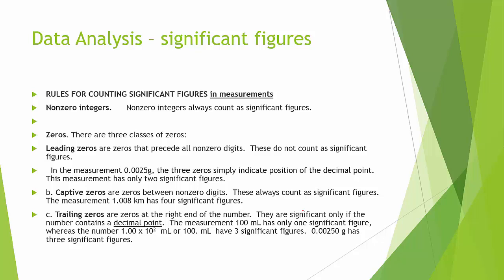First rule: if it's not a zero, it counts. If I have the number 123 — all non-zeros — I would say that has three significant figures. If I have the number 0.555 — no zeros — all three of those would be significant figures. So if it's not a zero, you count it.